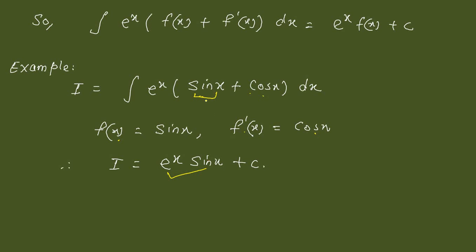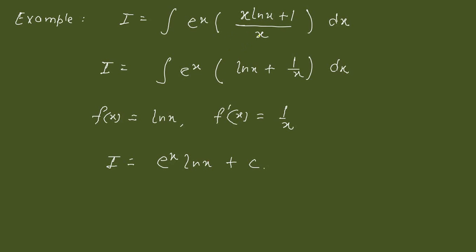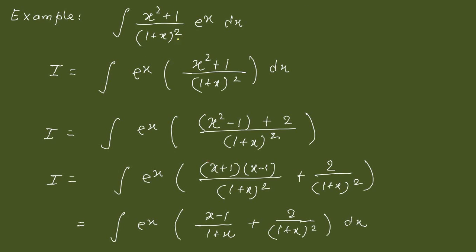Sometimes identifying f(x) may require some manipulation. Suppose we have the integral of e^x·(xlnx + 1)/x. We need to see two terms separated by a plus sign in the bracket, so we split it: the first term is lnx and the second is 1/x. This immediately tells us that f(x) = lnx and f'(x) = 1/x, so the integral is e^x·lnx + C.